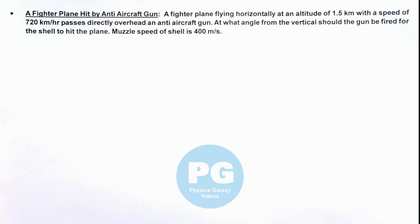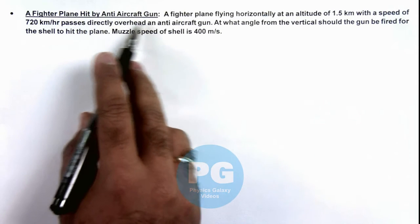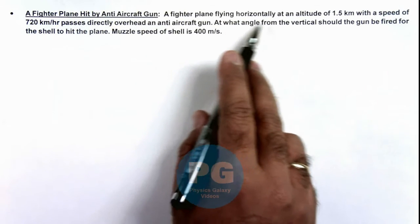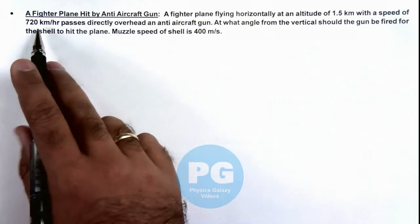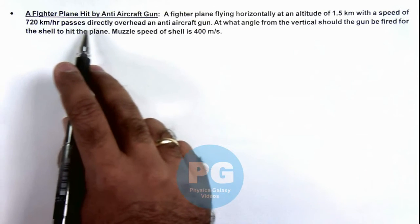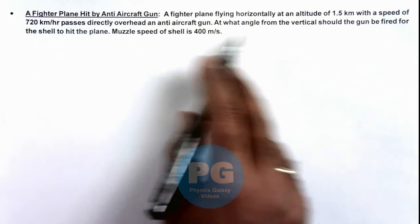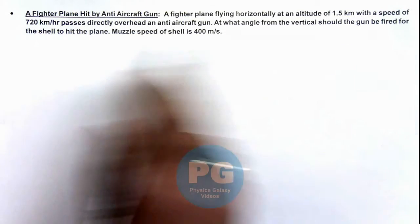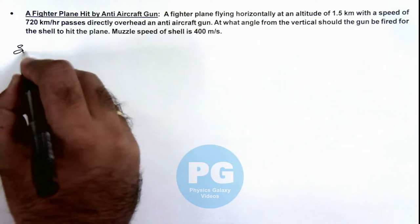In this illustration we'll discuss a situation when a fighter plane is hit by an anti-aircraft gun. A fighter plane is flying horizontally at an altitude of 1.5 kilometers with a speed of 720 kph and passes directly overhead an anti-aircraft gun. We are required to find at what angle from the vertical the gun should be fired for the shell to hit the plane. The muzzle speed of the shell is 400 meters per second.